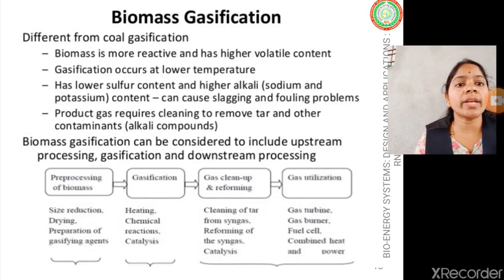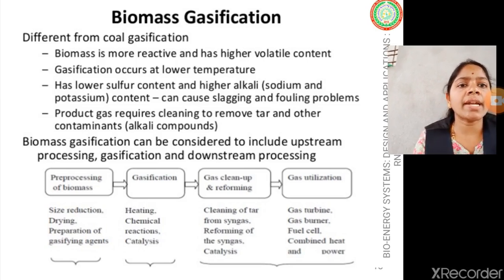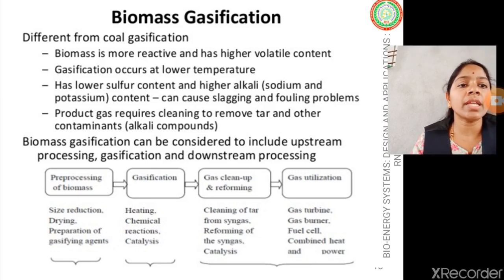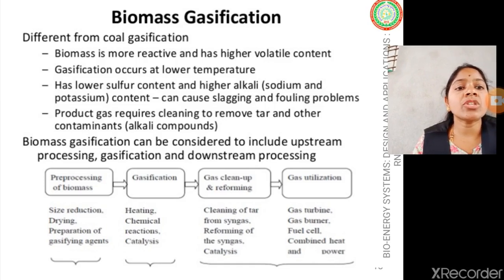When it comes to biomass gasification, there are two types: coal gasification and biomass gasification. The strategy of forming producer gas differs between the two. Biomass is more reactive and has higher volatile compounds unlike coal. Gasification occurs at lower temperatures in the case of biomass. Biomass has lower sulfur content compared to coal, but has higher alkali content — specifically sodium and potassium — which can cause slagging and fouling problems during the gasification process.